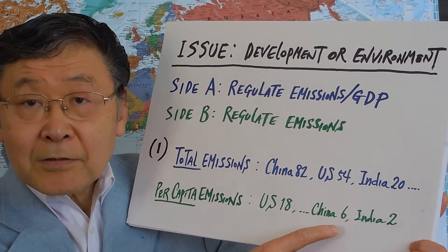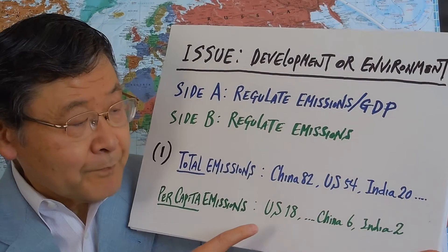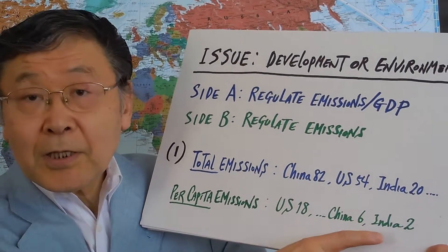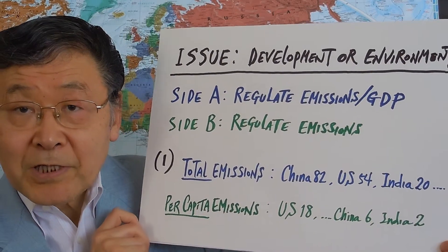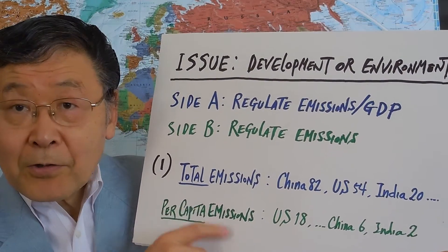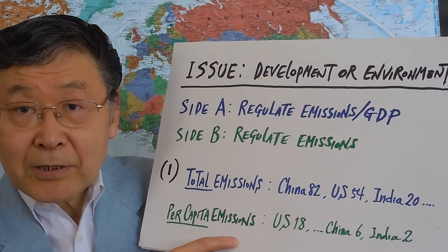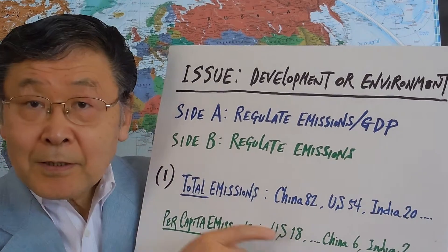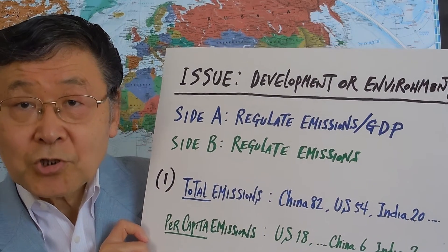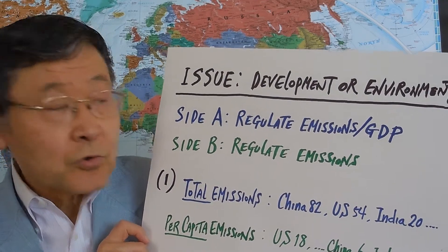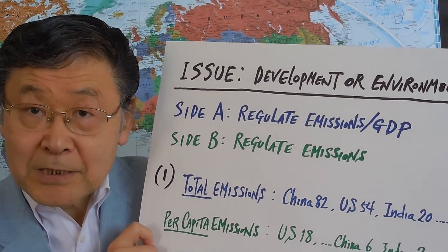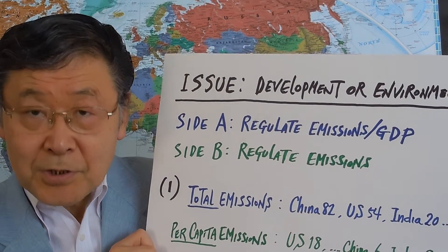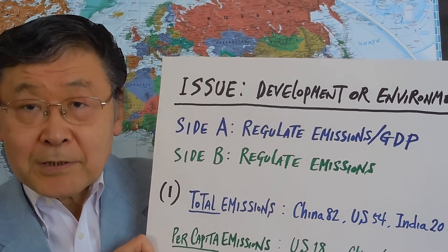In fact, China is only one-third of the US level in terms of per-capita emissions, and India is one-tenth of the US level. So according to these numbers, one might argue that the United States should regulate the absolute level, but China, India, and other developing nations should be allowed to grow further to catch up with the United States economically, while reducing emissions per GDP for energy efficiency.